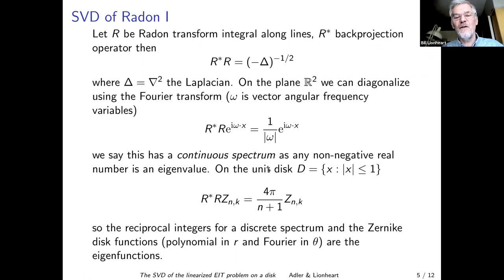On the unit disk, there's a different story. The eigenfunctions, the right singular functions, are these Zernike disk polynomials indexed by two integer indices, n and k. And the singular values, the squared singular values, the eigenvalues of this operator, are just basically one over n plus one. So it's a mildly ill-posed problem.